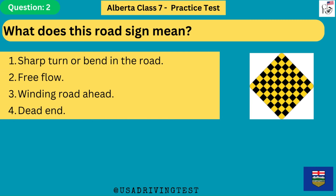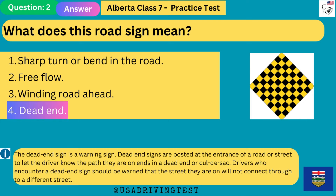What does this road sign mean? 1. Sharp turn or bend in the road. 2. Free flow. 3. Winding road ahead. 4. Dead end. The answer is 4: dead end. The dead end sign is a warning sign. Dead end signs are posted at the entrance of a road or street to let the driver know the path they are on ends in a dead end or cul-de-sac.